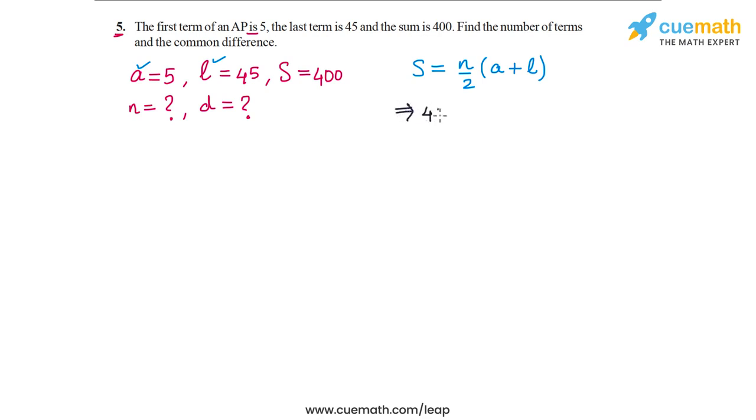So S is 400 equal to N by 2 times A plus L. So A is 5, L is 45, so 5 plus 45. So this is equal to N by 2 into 50.